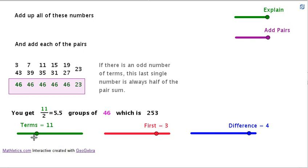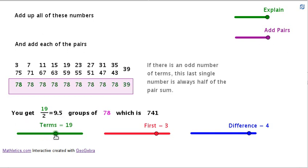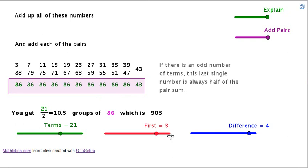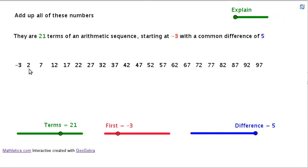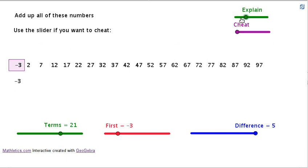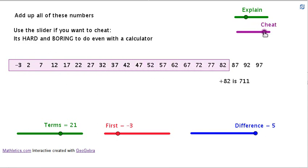If you change the number of terms, change where they start, and change the difference between them, you can go back to the beginning. Minus 3 plus 5 is 2, plus 5 is 7, etc., all the way up. Then we add them together, cheating, right to the end, and you've got 987.